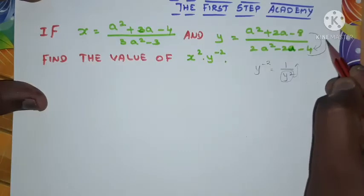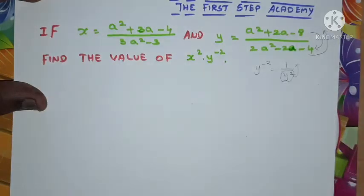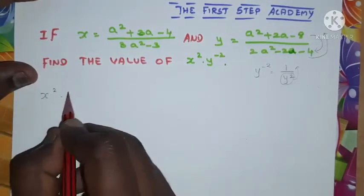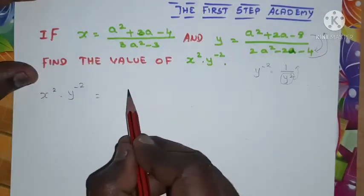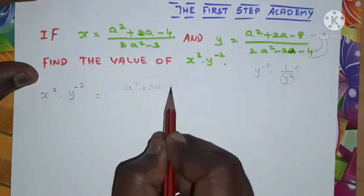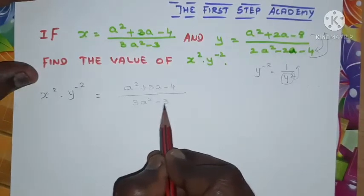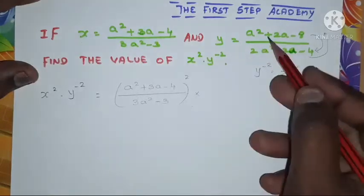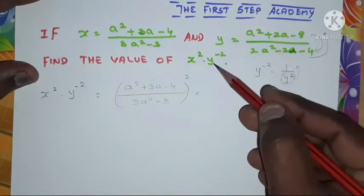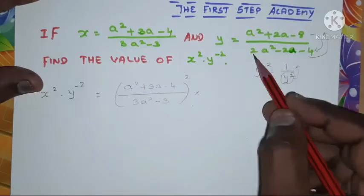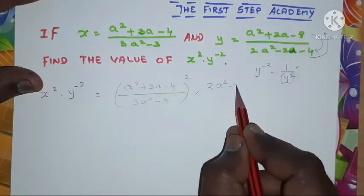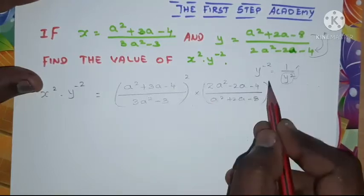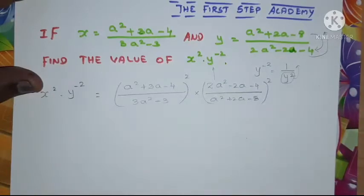The reciprocal means the numerator value will become the denominator and the denominator will become the numerator. So now we substitute accordingly. x² · y⁻² equals (a² + 3a - 4) / (3a² - 3), whole squared, multiplied by the reciprocal of y squared, which is (2a² - 2a - 4) / (a² + 2a - 8), whole squared.